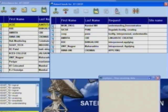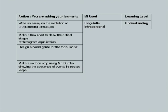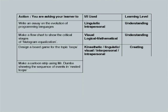I have four more examples but will not run the full quiz. When writing an essay on programming languages — Linguistic intelligence at an understanding level. When making a flow chart depicting critical stages of histogram equalization — Visual intelligence, at the understanding level. Designing a board game for the topic Loops — Kinesthetic or Linguistic depending on whether it is a word puzzle or a computer game — and the level reached is Creating.